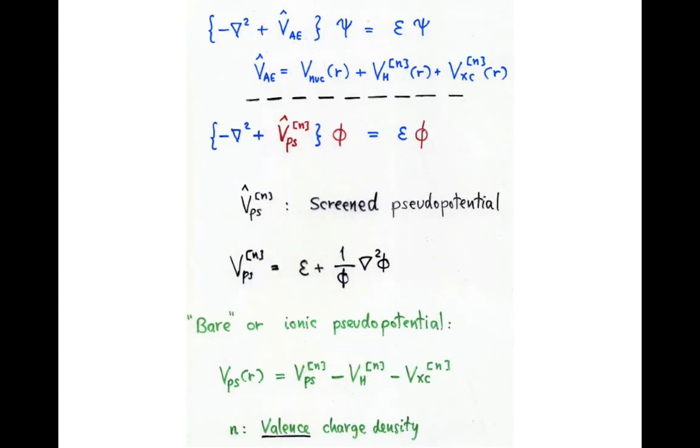Now, to conclude the process, we need to find which potential, which effective potential, acting on the pseudo wave function gives the same eigenvalue.